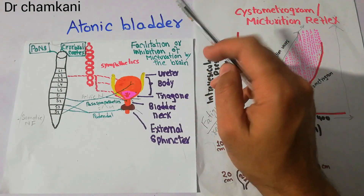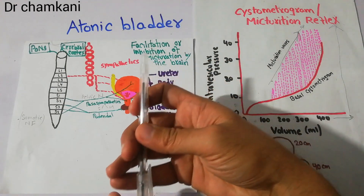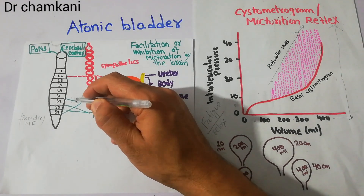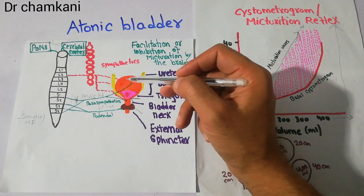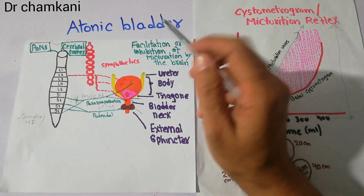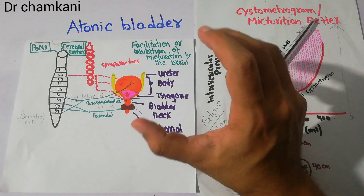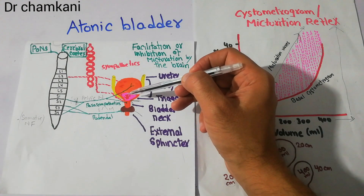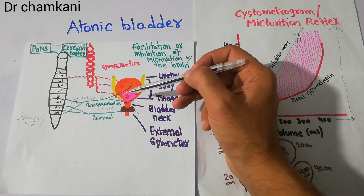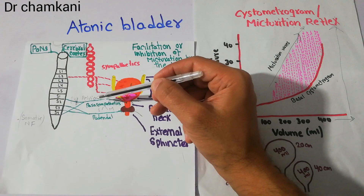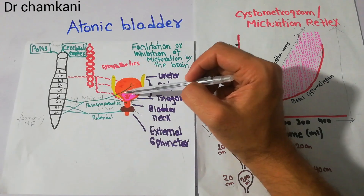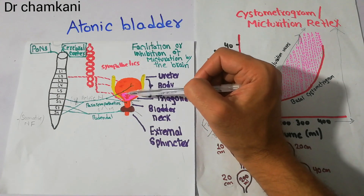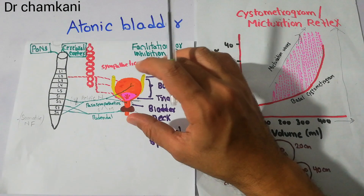If due to any problem the nerves carrying signals to the spinal cord are damaged, the urinary bladder will keep filling with urine but will not empty properly. This is because starting the micturition reflex requires the sensory stretch receptors to be stimulated and send signals through the pelvic nerve to the sacral segment of the spinal cord. If those sensory nerves are damaged, the micturition reflex will not occur and the bladder will not empty properly.